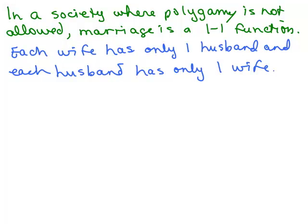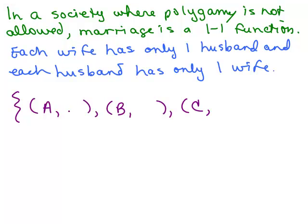Let's say you're at a party with three couples. Written as ordered pairs, the wives' names are Amy (A), Beth (B), and Cindy (C), and they're married to Don (D), Ed (E), and Frank (F) respectively. This is a one-to-one function because looking at all the ordered pairs, there are no repeats in the x values — A, B, C — and no repeats in the y values either.